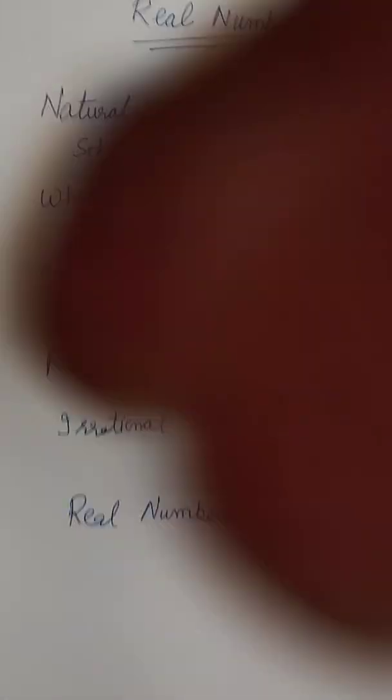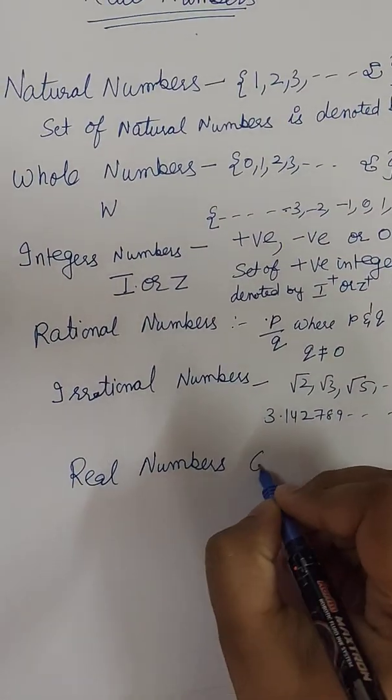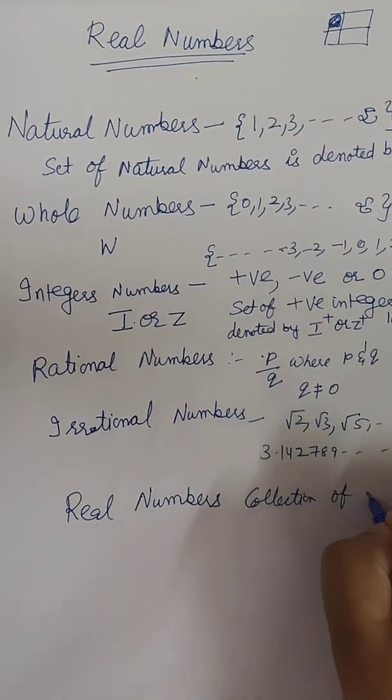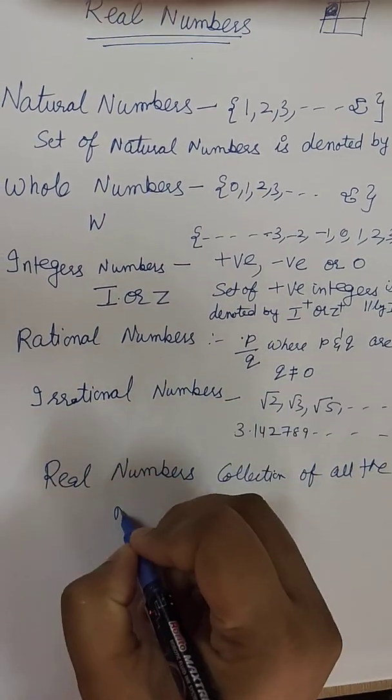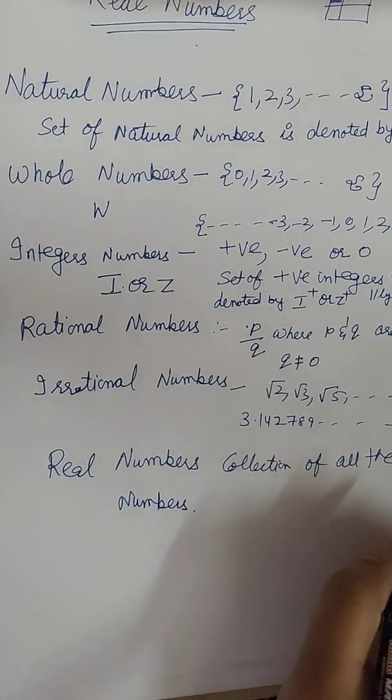So what are real numbers? Now collection of all the numbers. Clear?